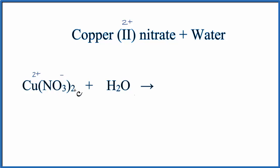So we have the +2, and then 2 times the -1, that's a -2. They balance out, it's a neutral compound, and it's called copper(II) nitrate.